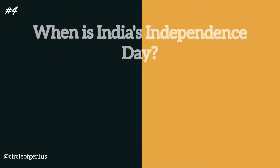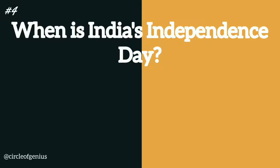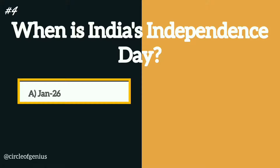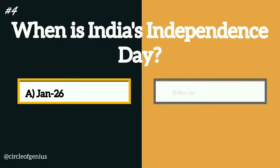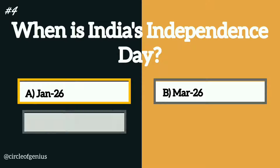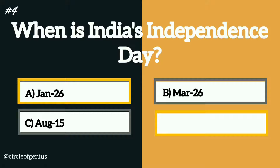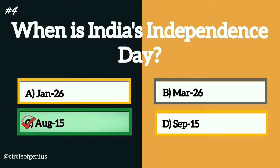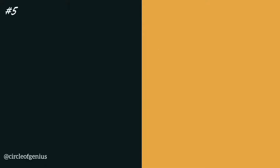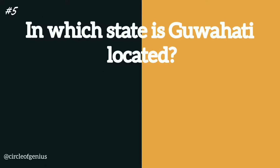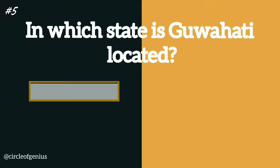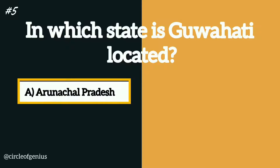Question number four: when is India's Independence Day? Option A: January 26, B: March 26, C: August 15, D: September 15. The correct answer is option C, August 15.